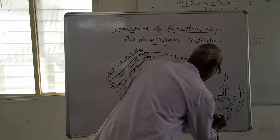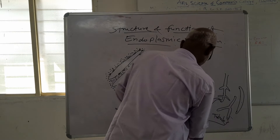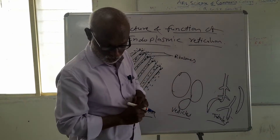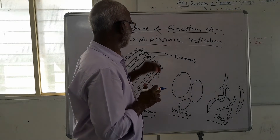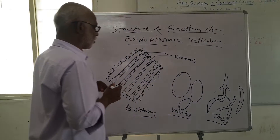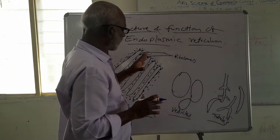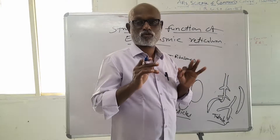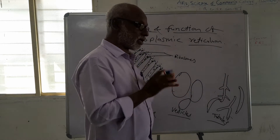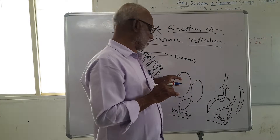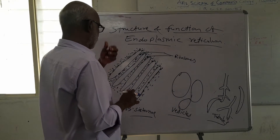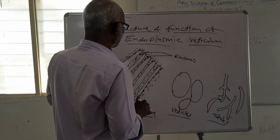These are tubules, cisternae, vesicles, and tubules. These three components make up the endoplasmic reticulum. There are two types of endoplasmic reticulum: granular and agranular. Granular means ribosomes are attached to the cisternae — it is called rough or granular endoplasmic reticulum. Some cisternae are smooth, and that is called agranular endoplasmic reticulum.